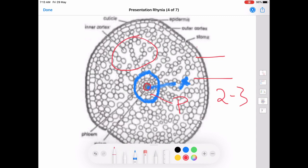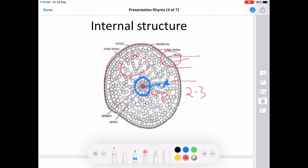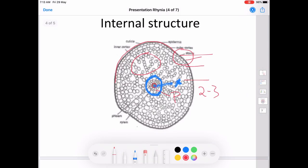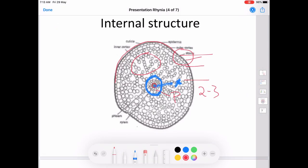The outer cortex has 2 to 3 layers of cells which are compactly arranged. The outermost layer is the epidermis which is covered by a thick layer of cuticle. The continuity of the epidermis is interrupted through the stomata. The stomata is seen only in the stem and is totally absent in the rhizome.